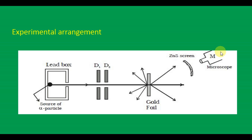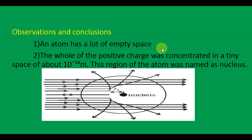Rutherford observed the following: most of the alpha particles either passed straight through the gold foil or were scattered by only small angles of the order of a few degrees. This observation led to the conclusion that the atom has a lot of empty space.